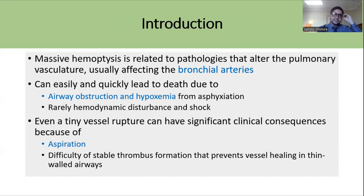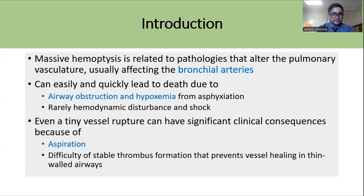Massive Hemoptysis is related to pathologies that alter the pulmonary vasculature, usually affecting the bronchial arteries, which are high-pressure blood vessels. It is important to identify patients with or at high risk of developing Massive Hemoptysis, because airway obstruction and hypoxemia from aspiration can immediately lead to death. Even a tiny vessel rupture can cause significant clinical consequences because of aspiration, and it is very difficult for a thrombus to form in a thin wide airway.